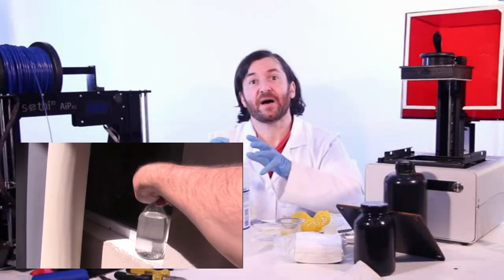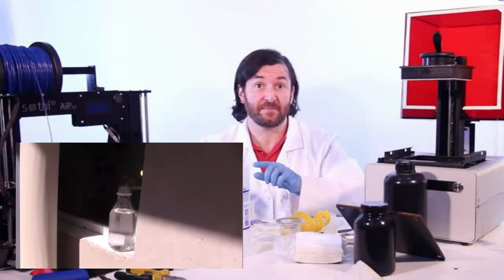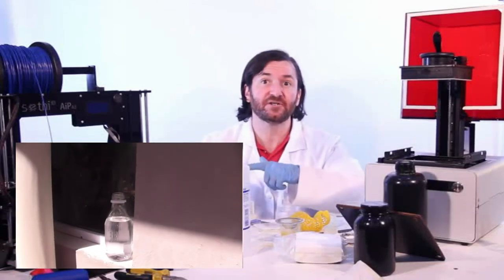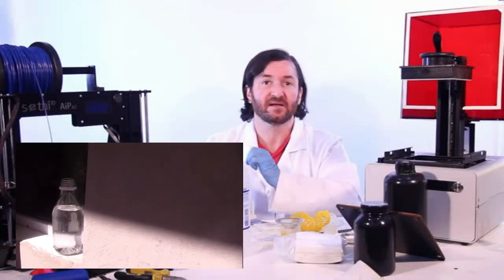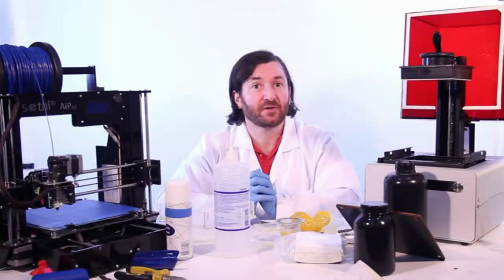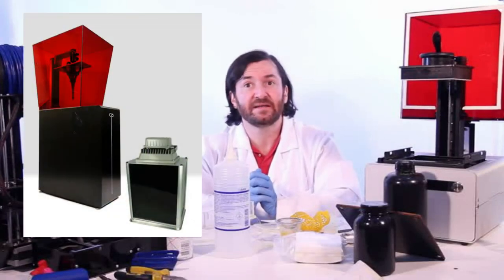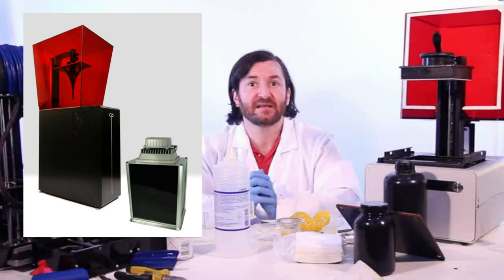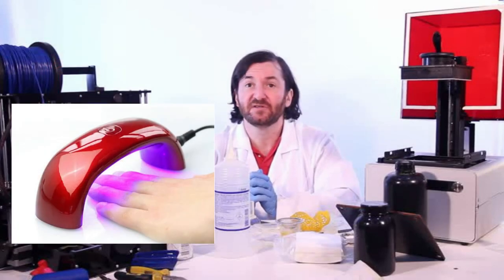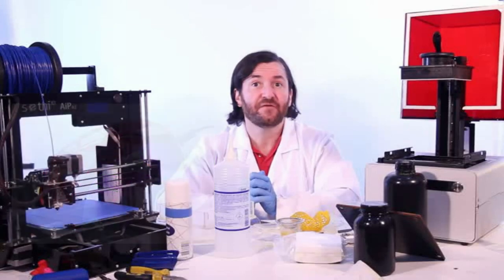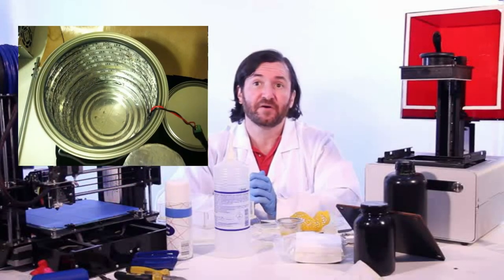Instead of putting the part in direct sunlight, for example, you will prefer submerging it in clean water and let it rest in the sun. An ultraviolet curing chamber might be useful. Some printers, like the Titan 1 DLP, have the device as an optional. Some people use nail curing lamps or DIY chambers with ultraviolet LEDs to perform this task.